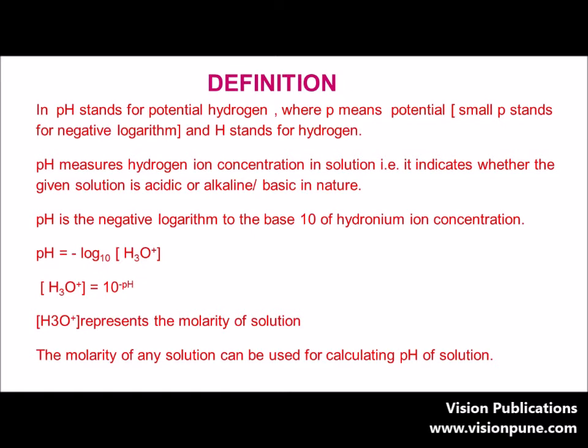So what does pH stand for? The 'p' in pH stands for potential, or more precisely, negative logarithm, and 'H' stands for hydrogen. So pH means the potential of hydrogen. pH measures hydrogen ion concentration in solution — that means how many hydrogen ions are present in the solution.